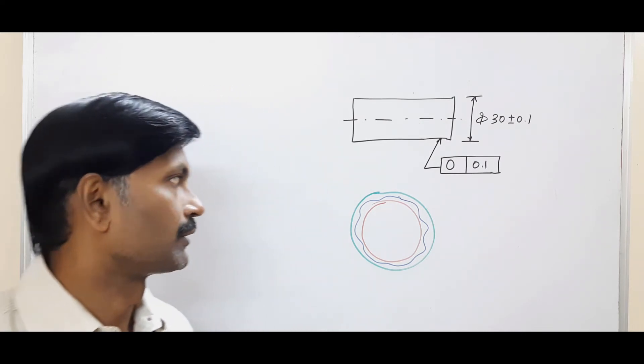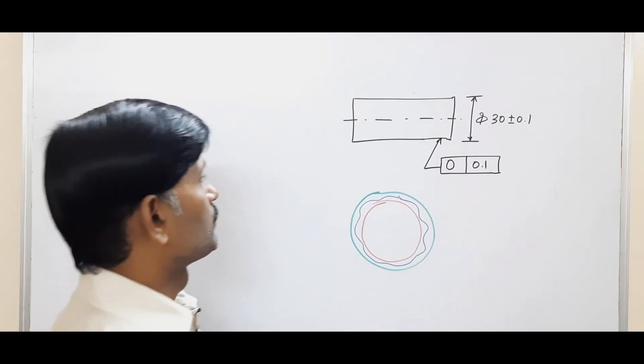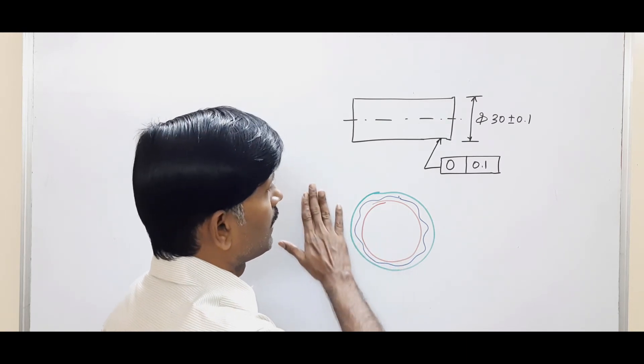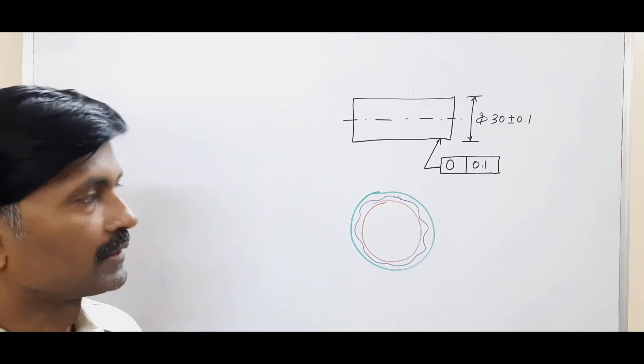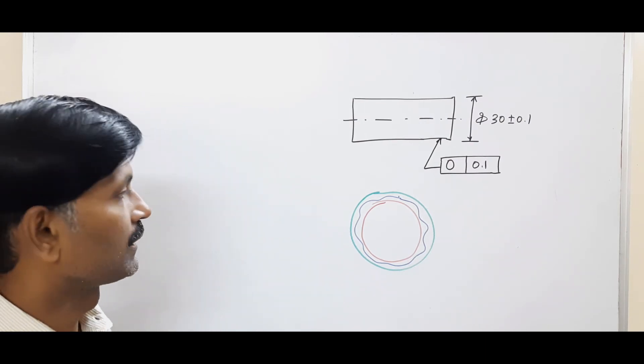This is all about circularity. Circularity is a two-dimensional entity. At any given cross section, the surface must lie within two coaxial circles which are 0.1 millimeters apart. The tolerance zone is two coaxial circles.